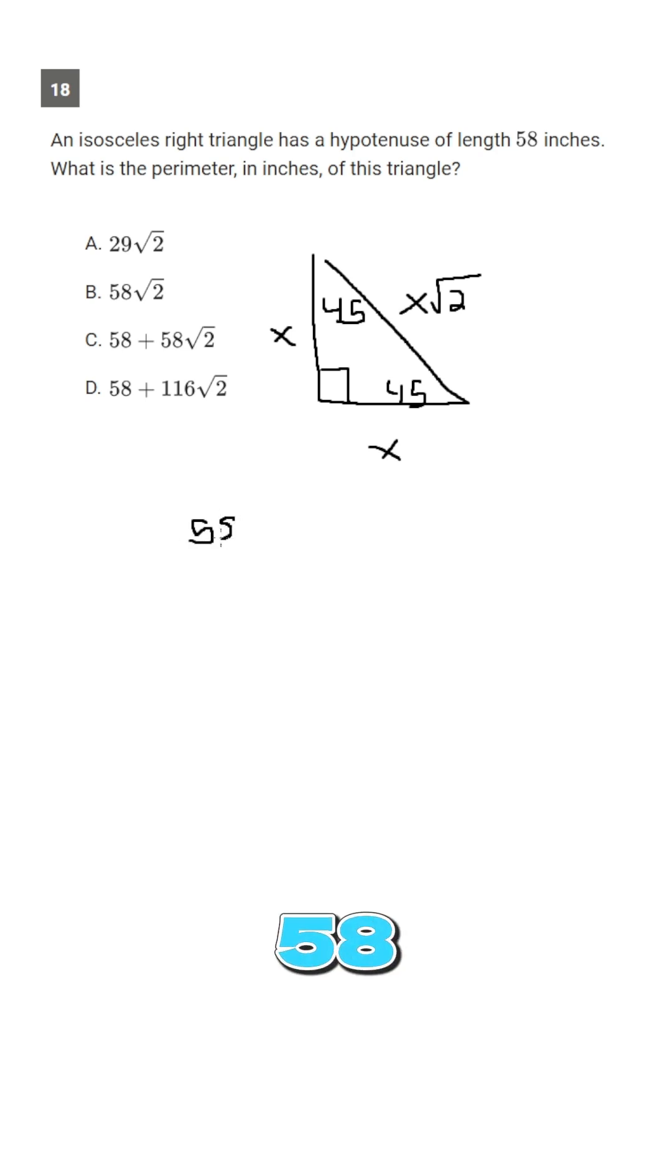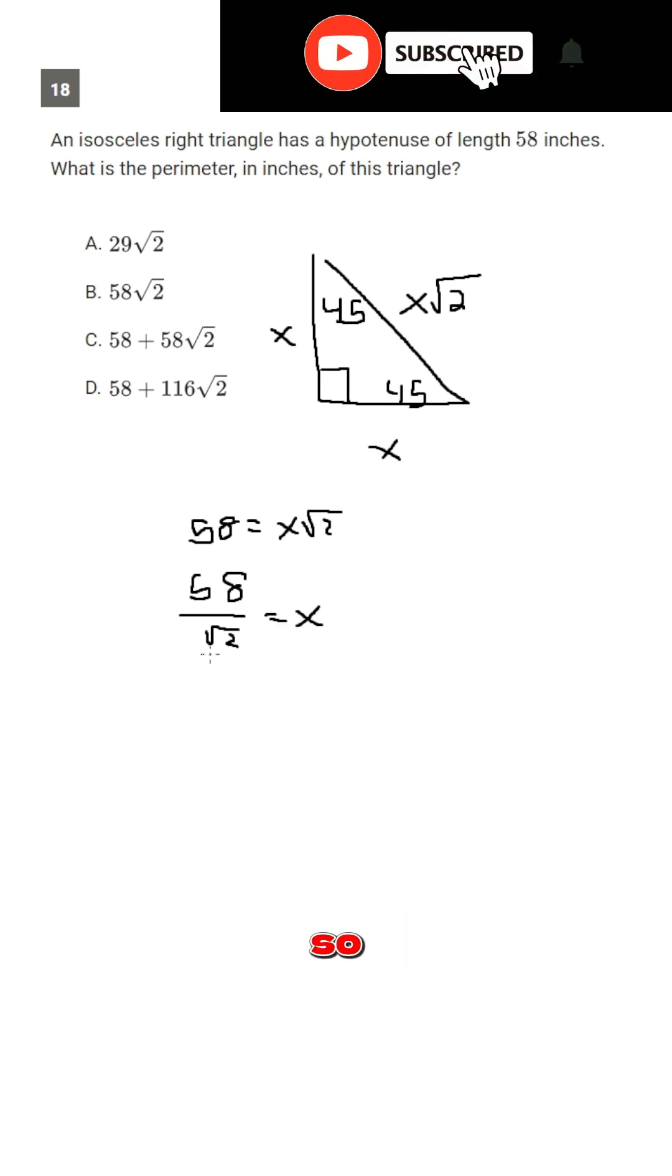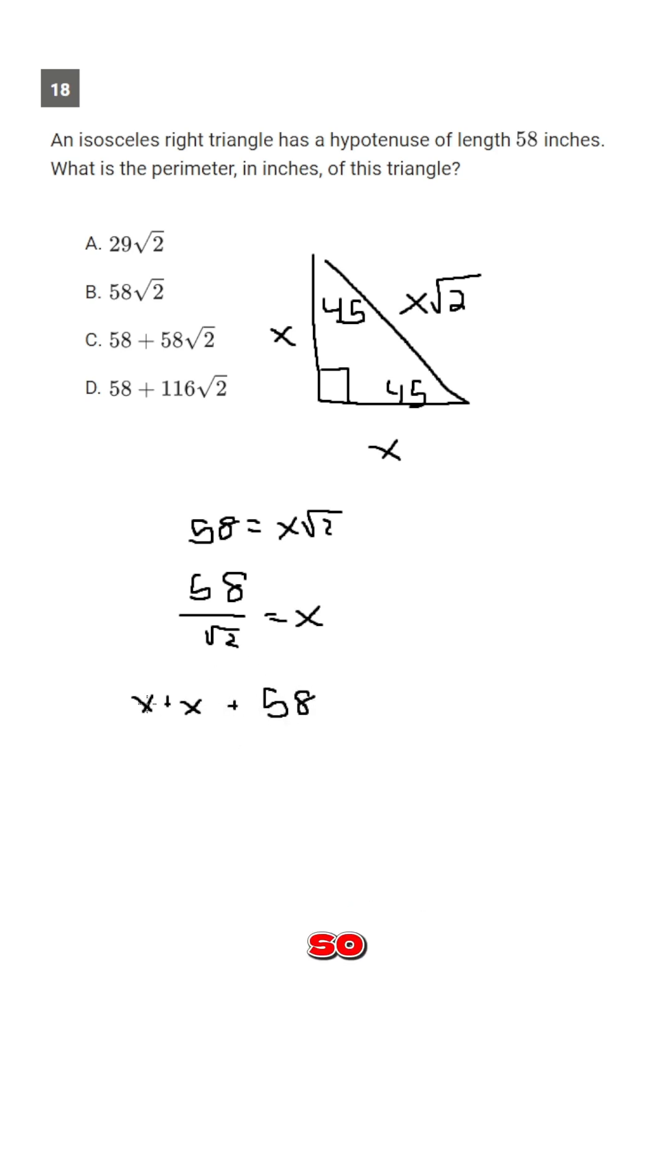So we know then that 58 is equal to x root 2. So 58 over root 2 would equal x. And so the perimeter here is going to be x plus x plus 58, which is 2x plus 58.